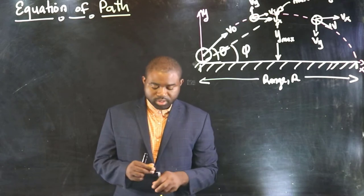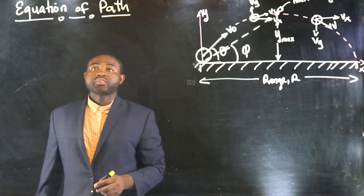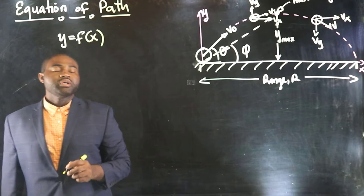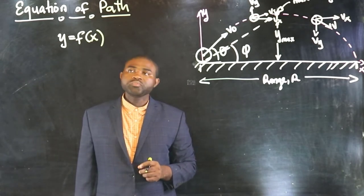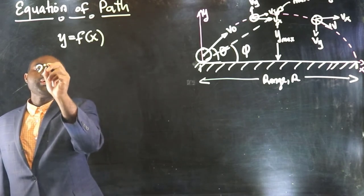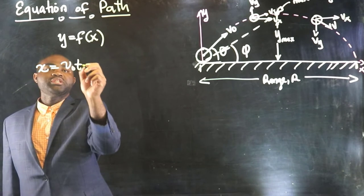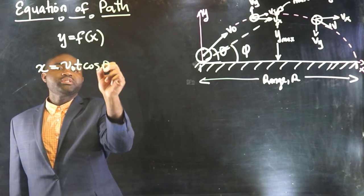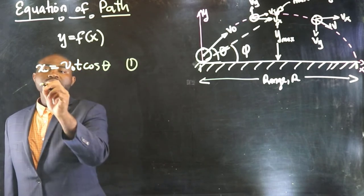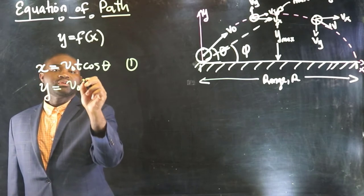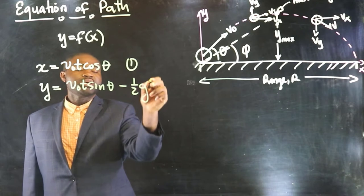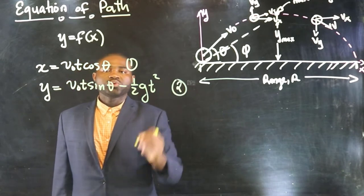Now, remember that the equation of path basically is a function of y in terms of x. So, what do we know? We know that x is v₀t cos θ. So this is equation one. We also know that y is equal to v₀t sin θ minus one half gt squared. This is equation two.